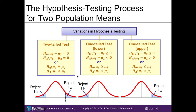When hypothesis testing for two population means, there are two ways we can write the hypotheses, and you'll see both on the homework. Just like in Chapter 9, we're working with two-tailed tests, one-tailed lower-tailed tests, and one-tailed upper-tailed tests.